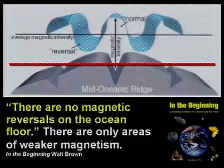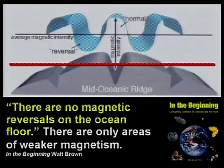Walt Brown has a great book called 'In the Beginning.' He's a Ph.D. in physics and taught at the Air Force Academy for years. His website is creationscience.com. I highly recommend his book, in spite of our minor disagreements. He's got great material on magnetic reversals. There are no magnetic reversals — only stronger and weaker magnetism. It's actually a jumbled-up mess down there at the Mid-Atlantic Ridge.